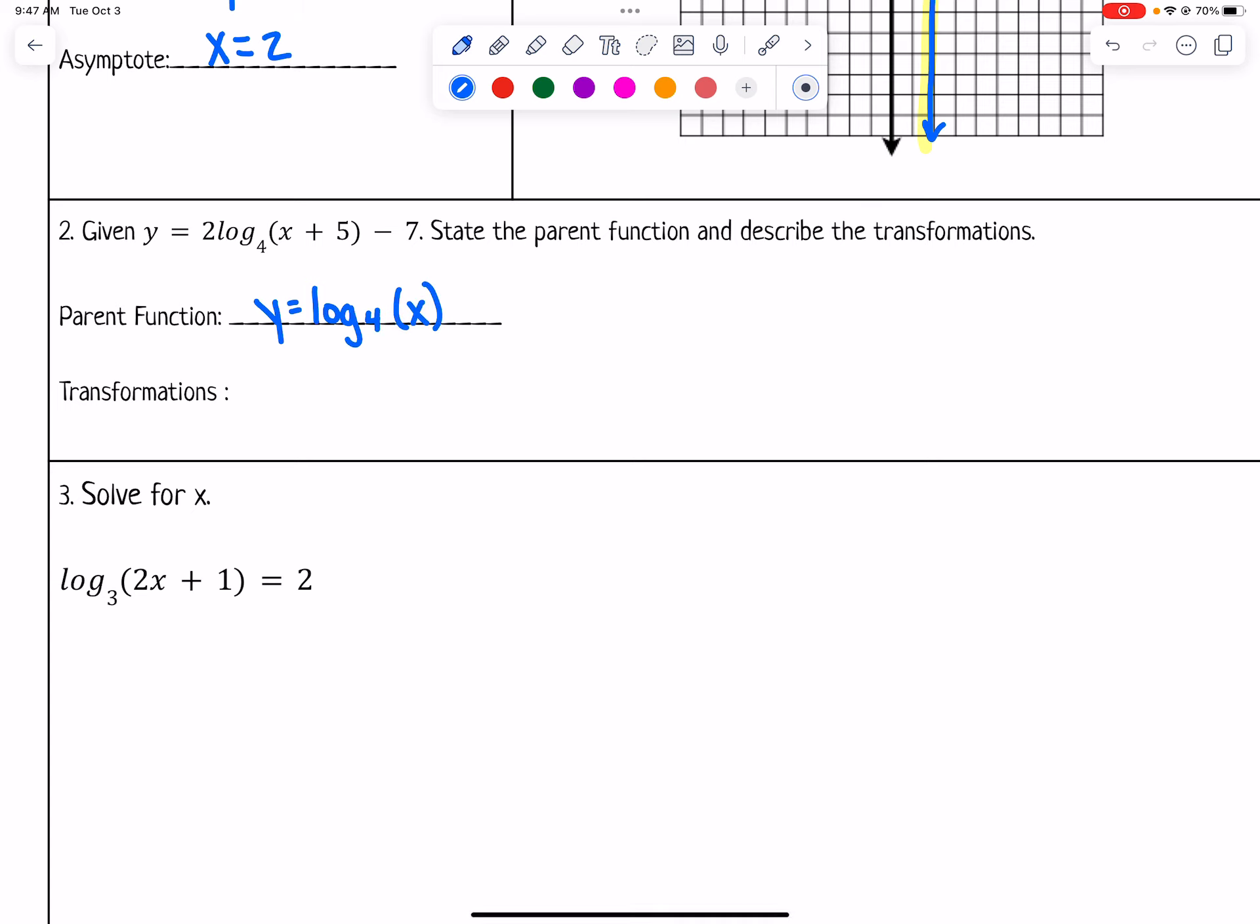The transformations would be the 2 out front makes it have a vertical stretch of 2, so vertical stretch by a factor of 2. It goes to the left 5 because of the plus 5 in the grouping symbol.